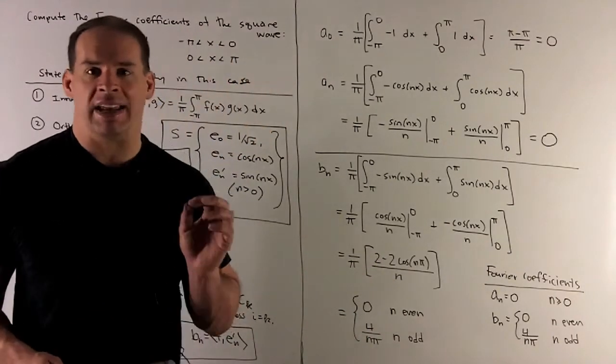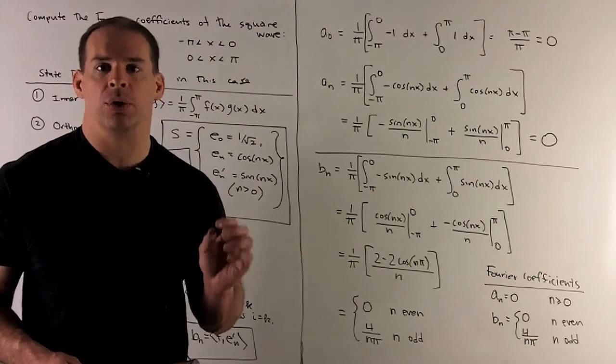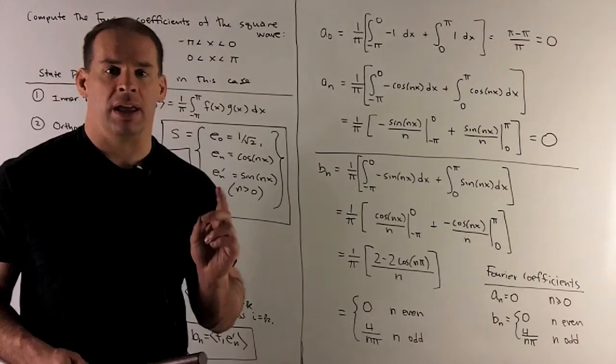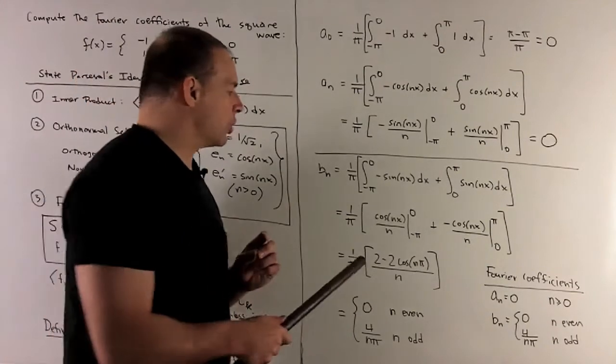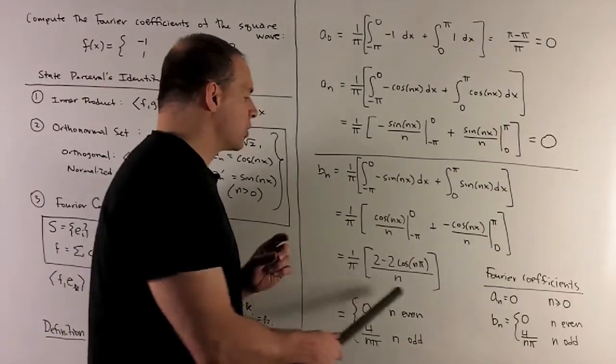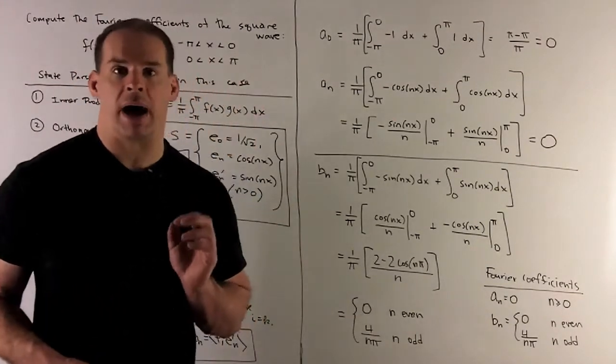We put in n even. Cosine becomes one. We get two minus two goes to zero. If we have n odd, cosine gives me a minus one. And then this is going to collapse to four over n pi.